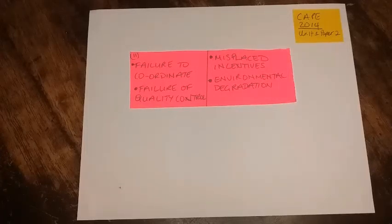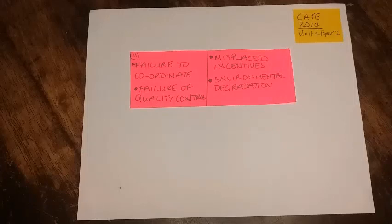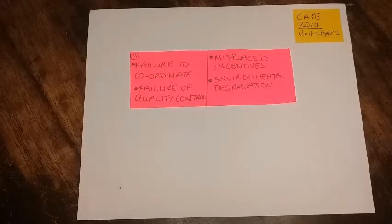For environmental degradation: production in command economies focused on fulfilling the directives of the state, to the exclusion of other considerations such as the environment. The failure to protect the environment occurred mainly to fulfill the government's plans and due to the lack of citizens' input on how best to use scarce resources while conserving the environment. If you like this video, you can like, share and subscribe — remember to hit the notification bell.